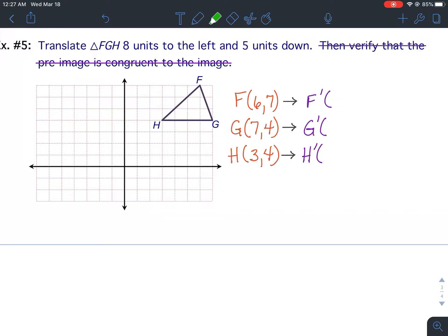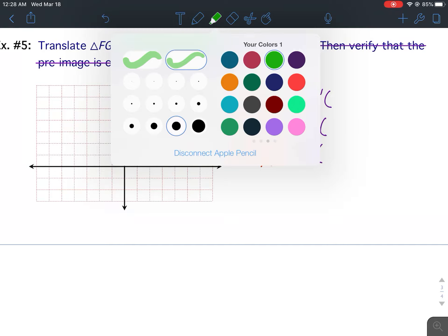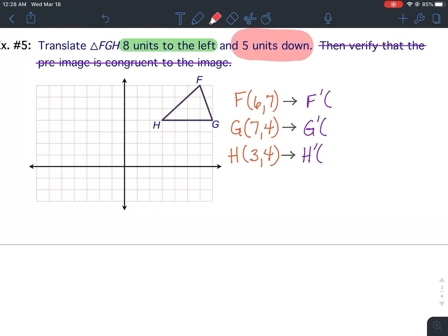Anyway, example five says: translate triangle FGH eight units to the left and five units down. I went ahead and crossed out the verify part because we're not going to do that, just like we crossed out in example four. So I'm going to highlight eight units to the left. You should underline that. And five units down, you should underline that.